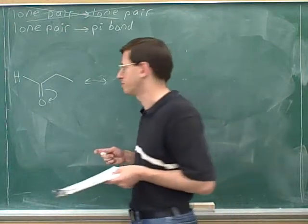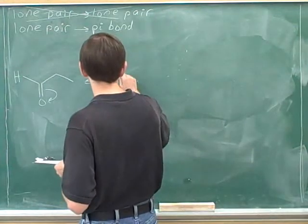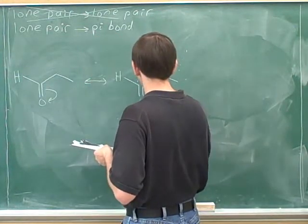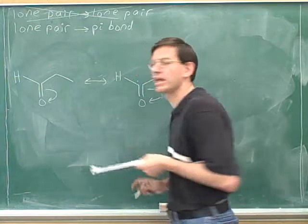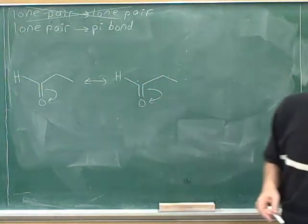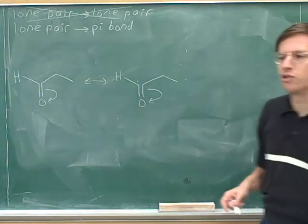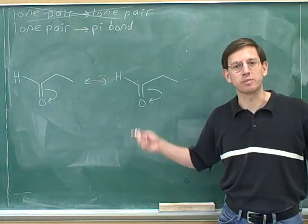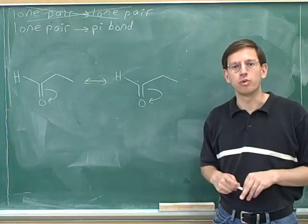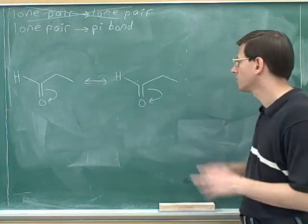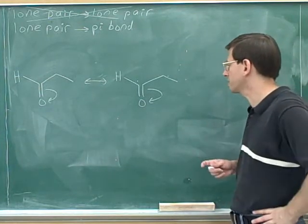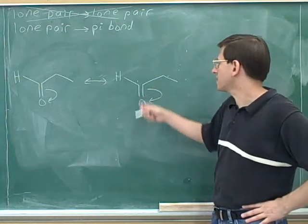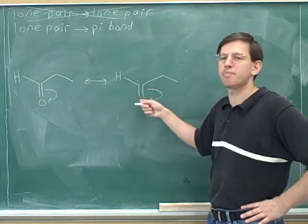First we redraw the original picture. Now we modify. We always ask for every arrow: where are the electrons coming from, where are the electrons going to? Where are the electrons coming from? You can see that the tail of this arrow is on the pi bond.